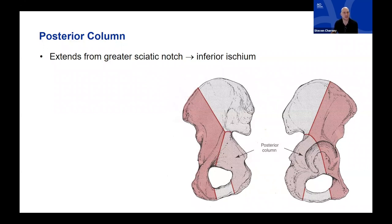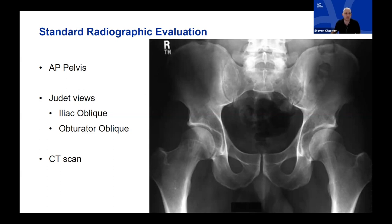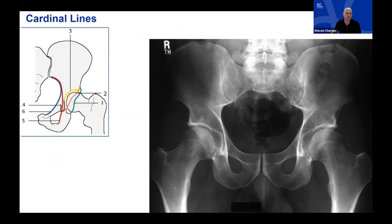For standard radiographic evaluation, we start with a screening AP pelvis. Most treating surgeons then obtain Judet oblique views — the iliac oblique and the obturator oblique. It's become commonplace for patients to get a CT scan, with or without contrast depending on your trauma center. This is the standard radiographic evaluation for pretty much any patient with an acetabular fracture.